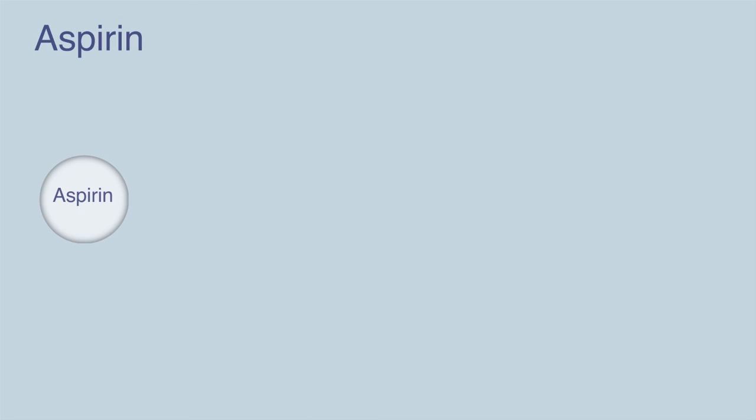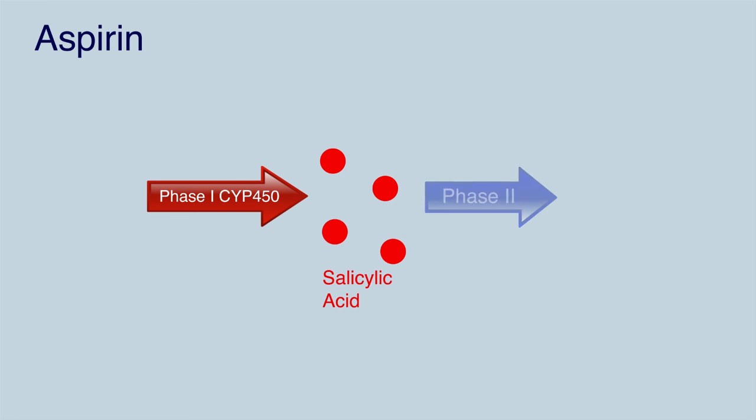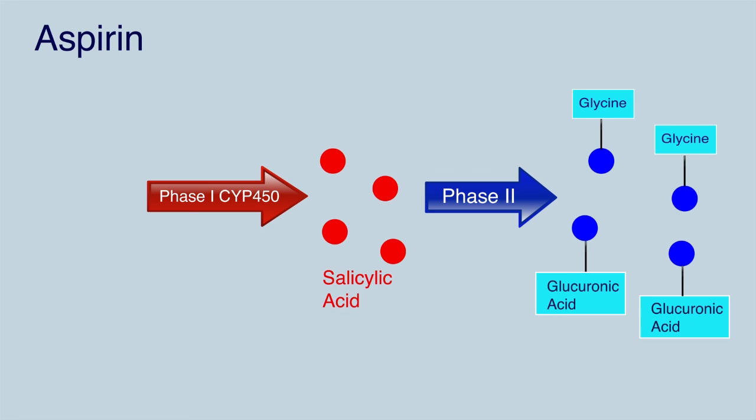Let's take the example of aspirin. Aspirin undergoes phase 1 metabolism with cytochrome P450 enzymes and gets converted to salicylic acid. In phase 2, it is conjugated with either glycine or glucuronic acid forming a range of ionized metabolites that can then be excreted in the urine.